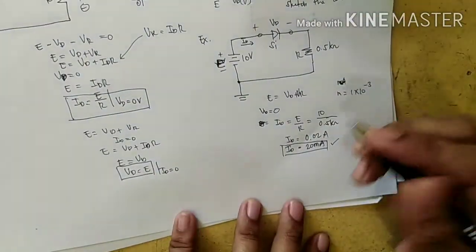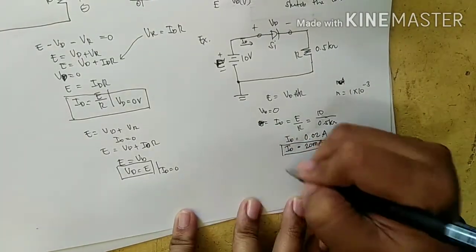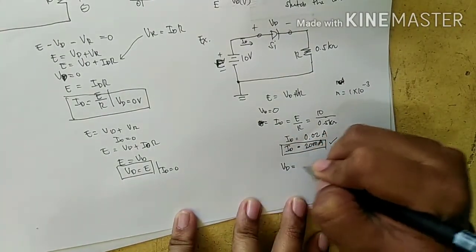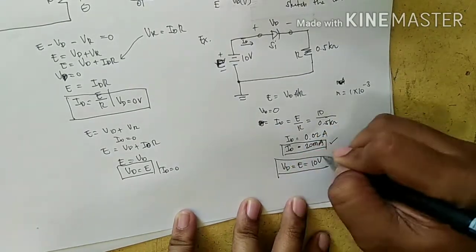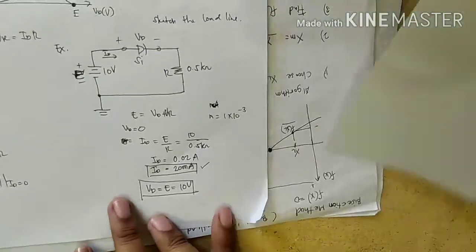I will just calculate VD. VD is equal to E, where this is equal to 10 volts. Let's sketch.